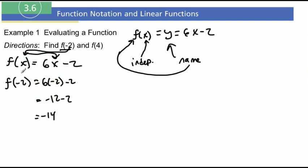So what this means is my x value is negative 2 and my y value is negative 14. So really, we just found a solution or a coordinate point on this graph right here. So it's the x value, negative 2, and y value, negative 14.